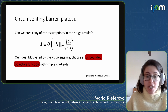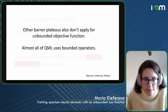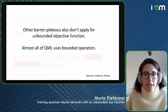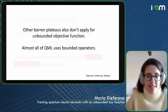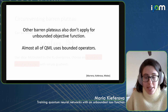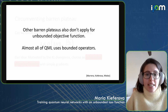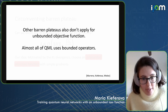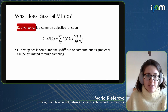This idea has a very natural motivation coming from traditional machine learning. The main message is that barren plateau results don't apply to unbounded objective functions. There might still be other barren plateaus that we don't know about yet, but all existing results only apply to objective functions that are bounded.